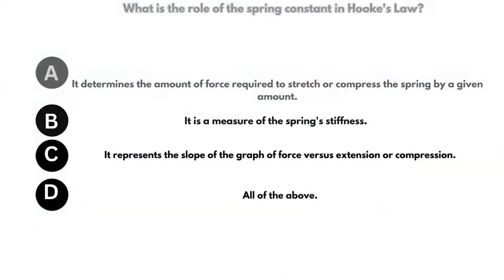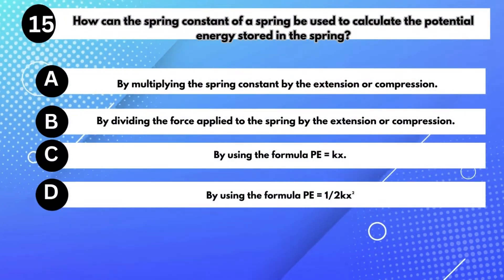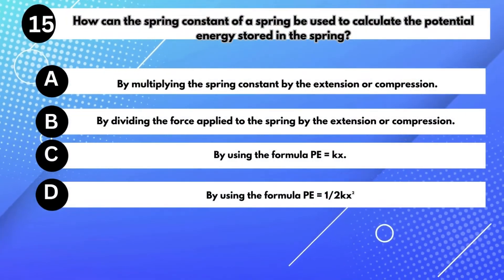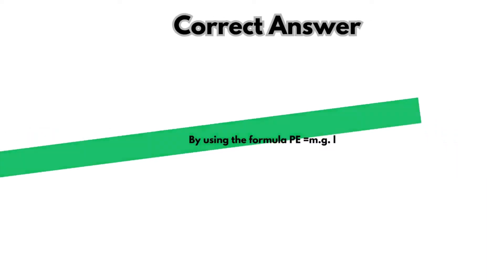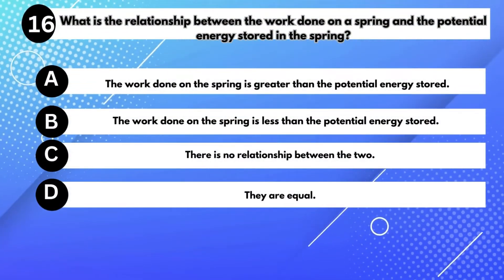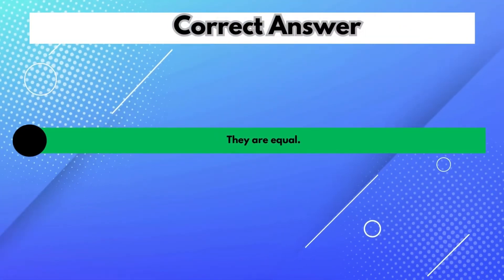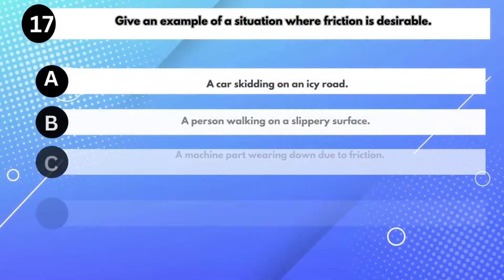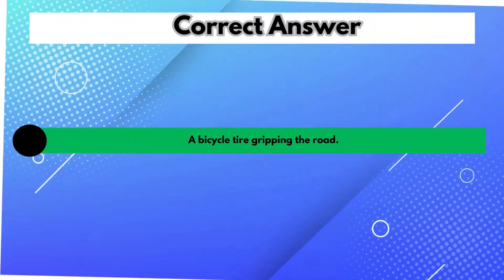What is the role of the spring constant in Hooke's Law? Answer D: All of the above. How can the spring constant be used to calculate the potential energy stored in the spring? Answer D: By using the formula PE equals one-half kx². What is the relationship between the work done on a spring and the potential energy stored? Answer D: They are equal. Give an example of a situation where friction is desirable. Answer D: A bicycle tire gripping the road.